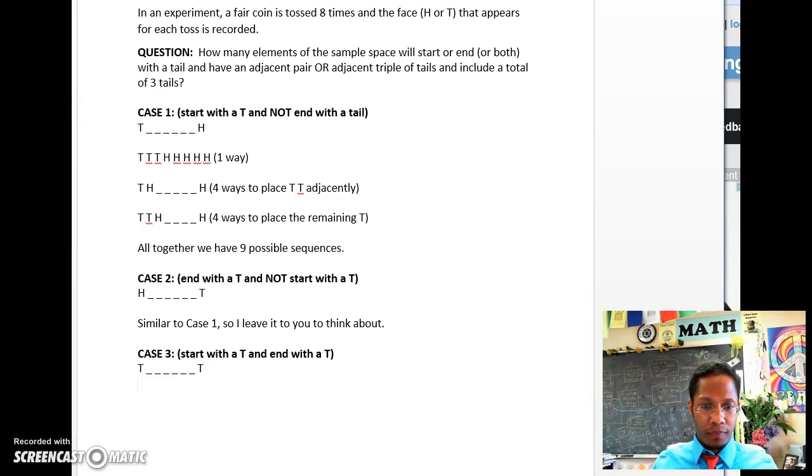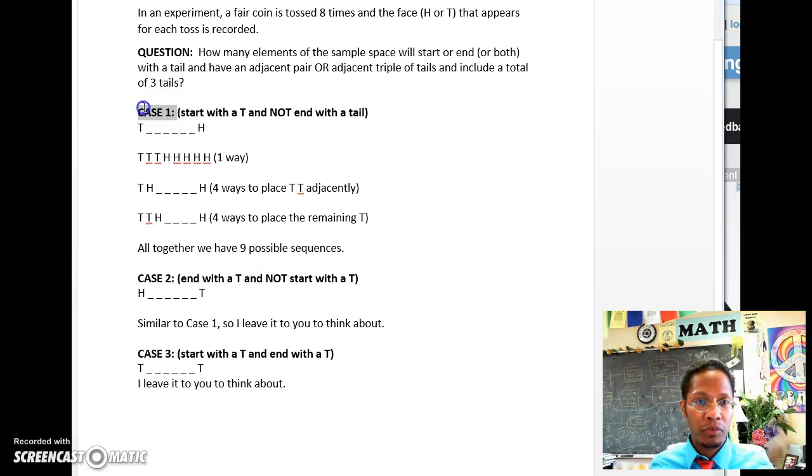So I leave this to you to think about too, but we're placing another T here. We have to have an adjacent pair. We cannot have an adjacent triple. I leave it to you to think about how many ways we can have case three. So we add the number of ways we have case one to the number of ways we have case two to the number of ways we have case three. And we sum those up.